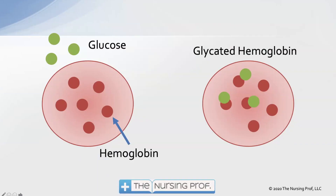What happens to create Hemoglobin A1c is that we have glucose floating around in the bloodstream — that's the picture on the left — and we have our normal red blood cell with hemoglobin floating around there. Glucose will bind to hemoglobin in a set pattern. When glucose binds to hemoglobin, we call that glycolated hemoglobin. You can see on the right side we have hemoglobins with glucose attached to them. Glucose attaches to hemoglobin in a direct proportion to the highest level of glucose in the bloodstream.